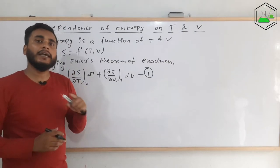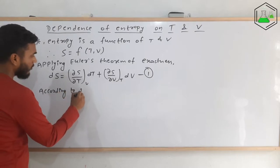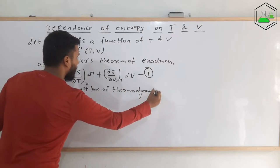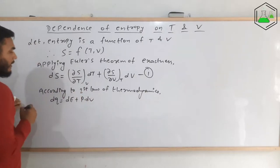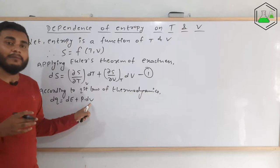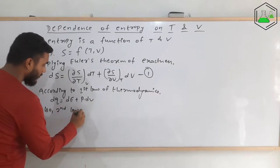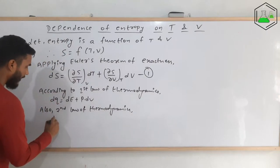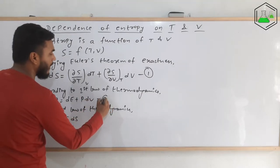Since we are studying thermodynamics, we apply the first law: dQ = dE + p dV, where dQ is the change in heat energy, dE is the change in internal energy, p is the pressure, and dV is the change in volume. The second law of thermodynamics gives us: dQ = T dS. Let us label these equation A and equation B respectively.